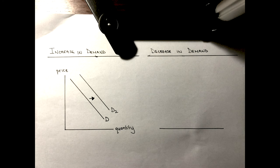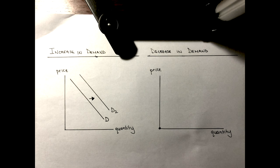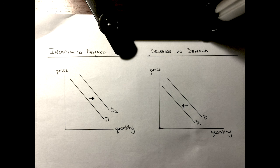Let's do the same thing for a decrease. We're going to put in our axes, label y-price, label x-quantity, and then draw a downward sloping demand curve — label it D. With a decrease in demand, this time we shift to the left and label it D1 or D2. As long as it has a new label, we're okay.